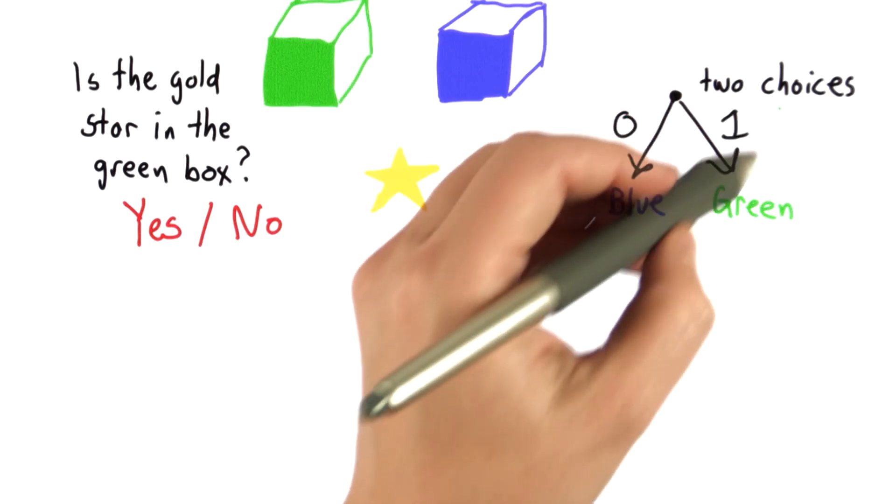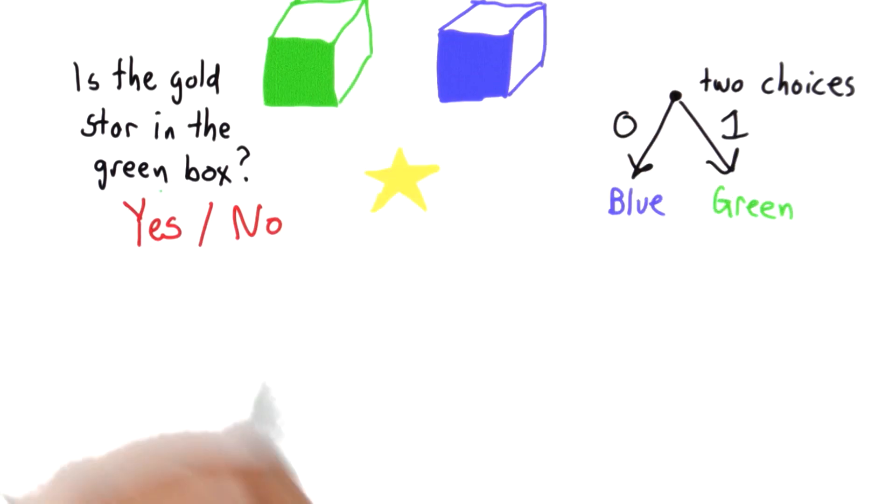If all we can do is send bits, we can send either a zero or a one, or a yes or a no, but let's think of it as zero and ones now. Can we send anything more interesting? And it turns out that we can actually send everything that we want just using bits. So instead of just picking between two boxes,